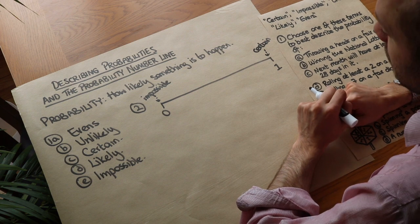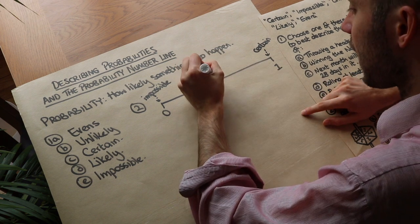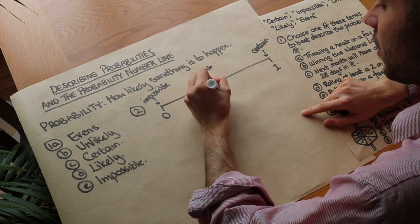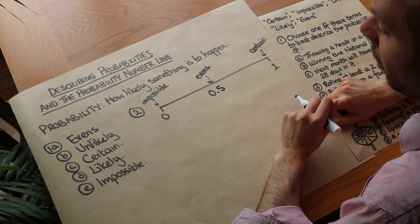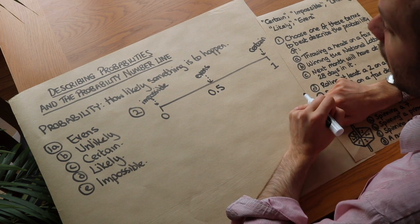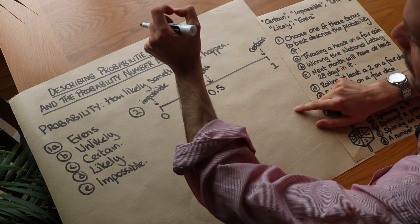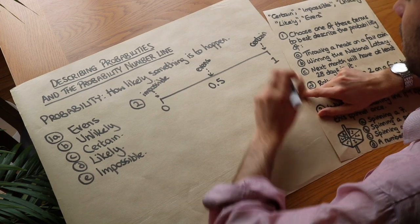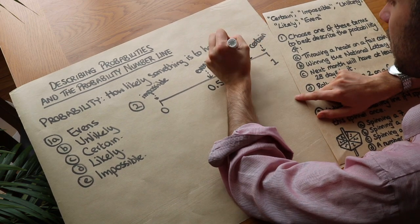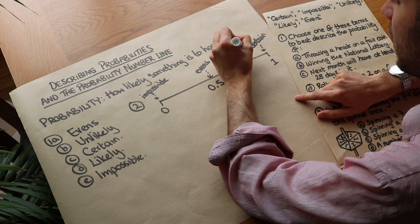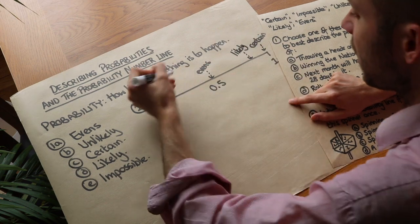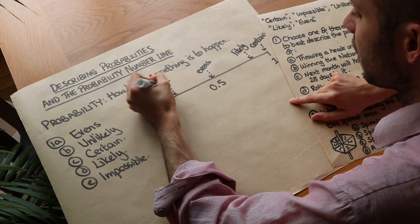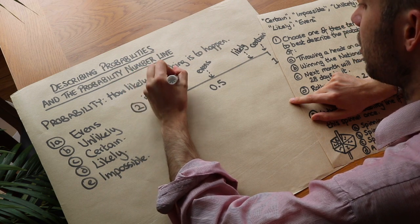Where do you think evens would be? Well, evens would be exactly in the middle. And that would be a probability of 0.5 or half. So it's a half chance of it happening if it's as likely to happen as it is to not happen. And you might be able to guess where likely and unlikely would occur. So likely is going to be somewhere close to certain. Obviously, it's slightly subjective what likely means. It could be closer. And then unlikely is going to be around here, isn't it? Close to impossible.